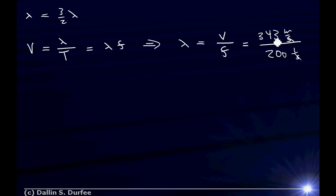And now I get something that's units of meters, right? 343 over 200. And I want three halves of that. So the distance I traveled is three halves times lambda, which is 343 meters divided by 200. And I'll let you plug that into the calculator yourself.